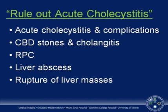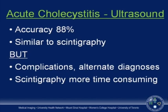We're all very familiar with the requisition from the emergency room physician to rule out acute cholecystitis, but in fact less than half of these patients will actually have acute cholecystitis or its complications. There's a whole array of other conditions that can mimic it, such as choledocholithiasis, ascending cholangitis, recurrent pyogenic cholangiohepatitis, liver abscess, and rupture with hemorrhage of liver masses. Ultrasound has an accuracy of approximately 88%, similar to scintigraphy, but with advantages such as identifying complications or offering alternative diagnoses if the gallbladder is normal.